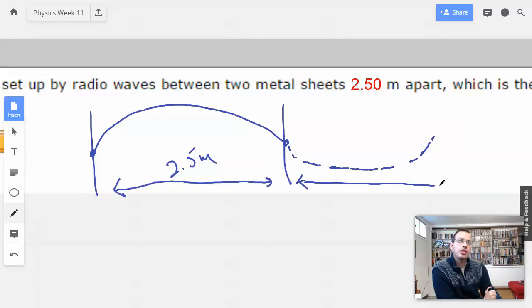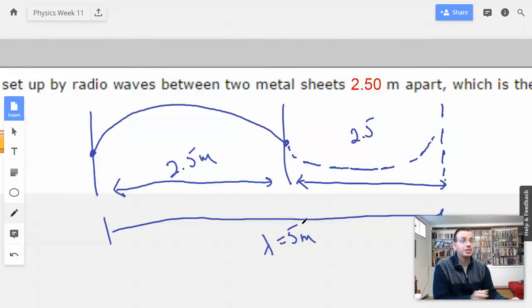And then right here, as I drew, is what I would imagine the rest of the wave to look like. So the wavelength equals 5 meters. That's the trick they are trying to show you here.